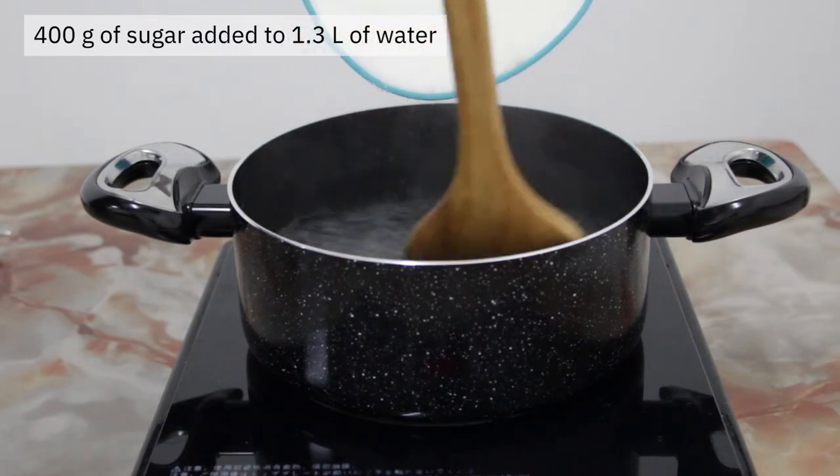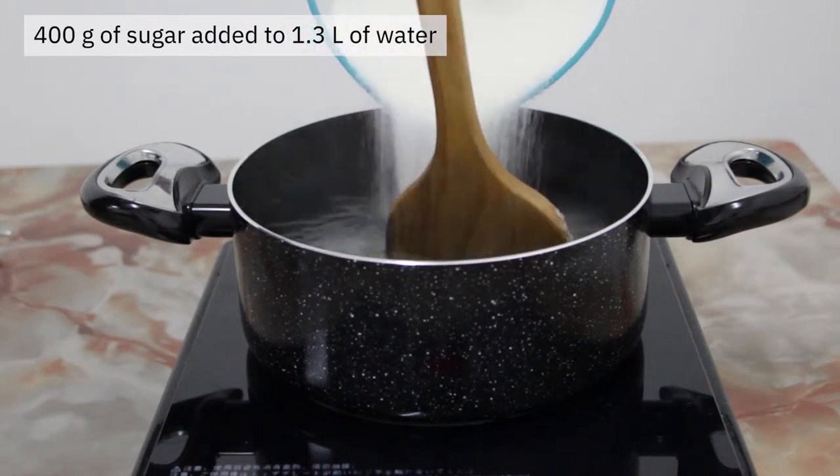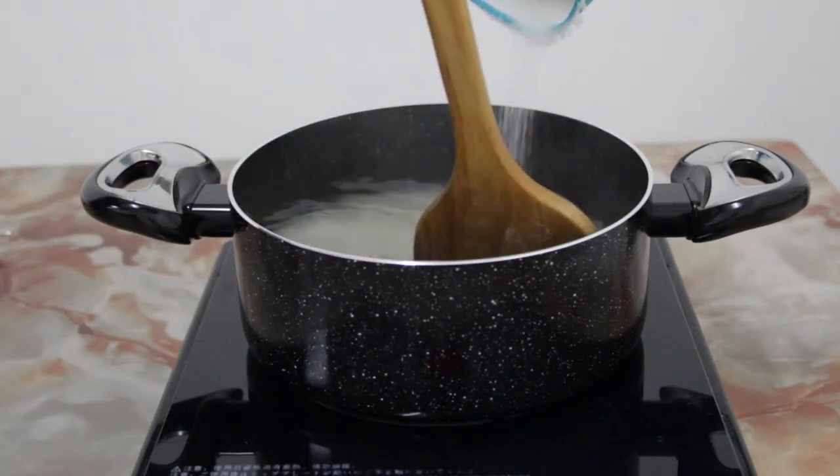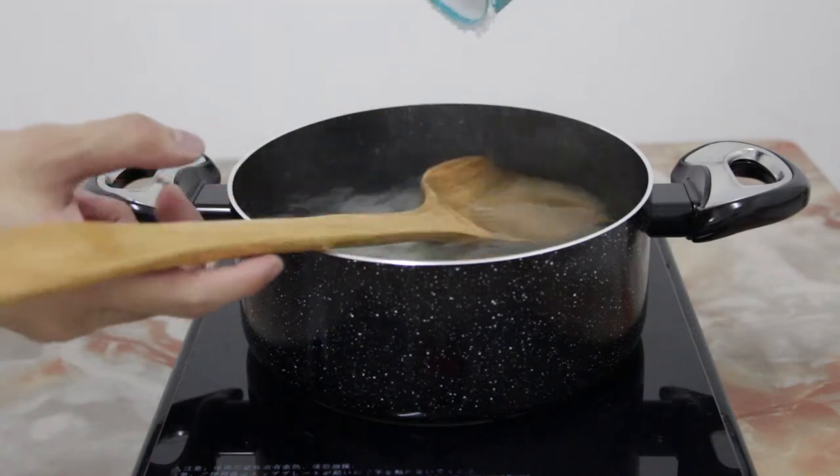First, 400 grams of white sugar is weighed out and poured slowly into a boiling pot of roughly 1.3 liters of water. The content of the cooking pot is stirred slowly until the sugar dissolves completely.